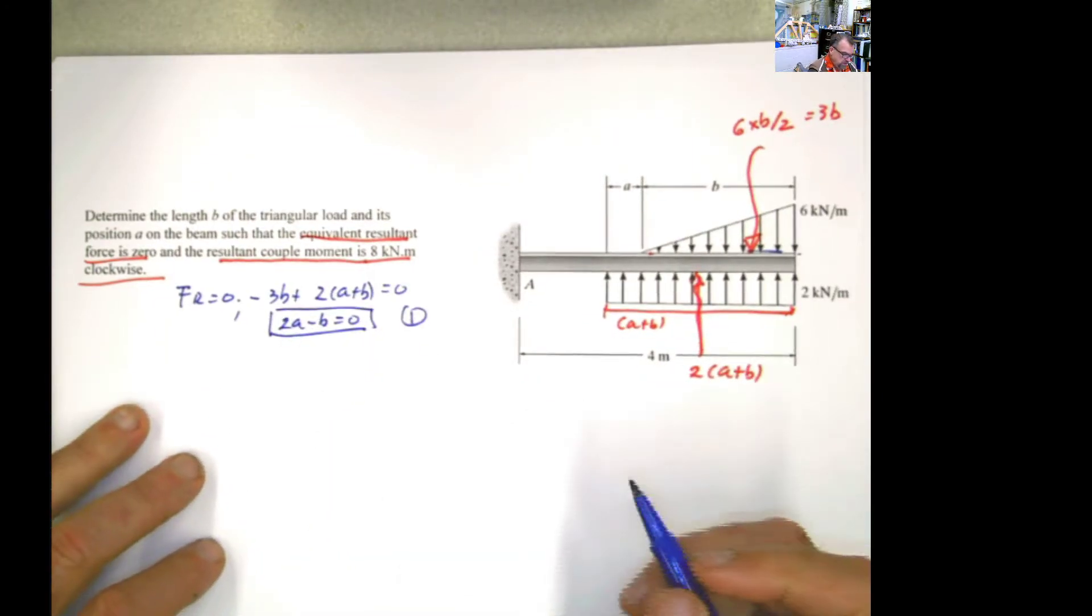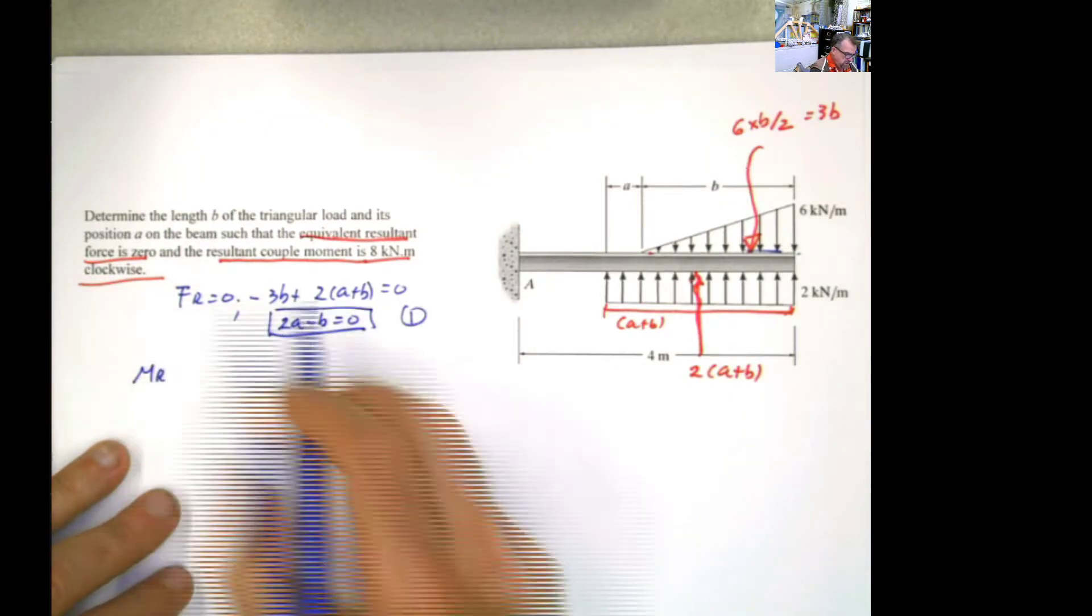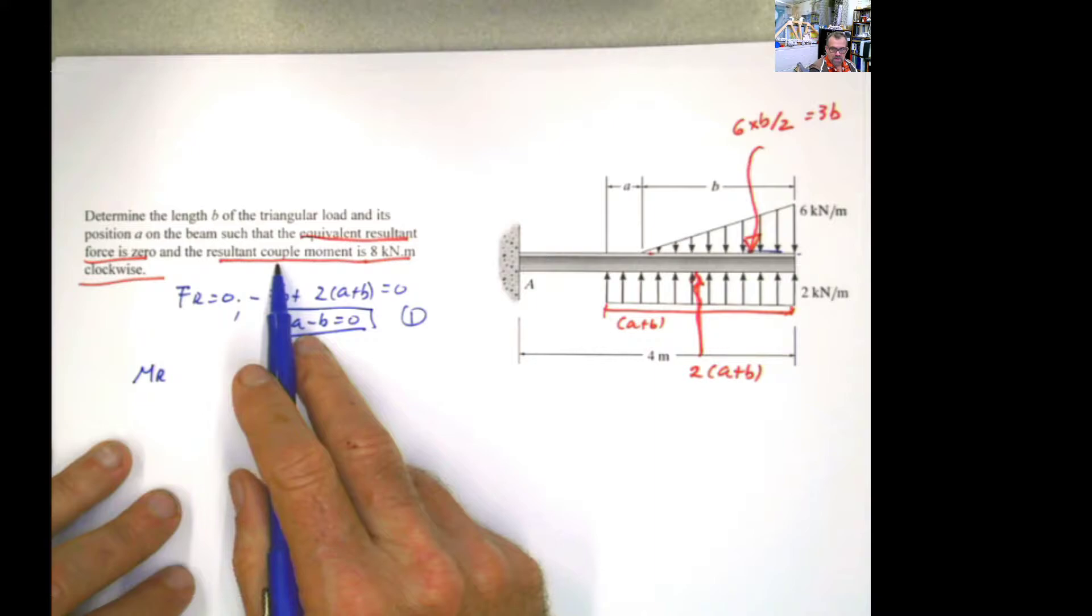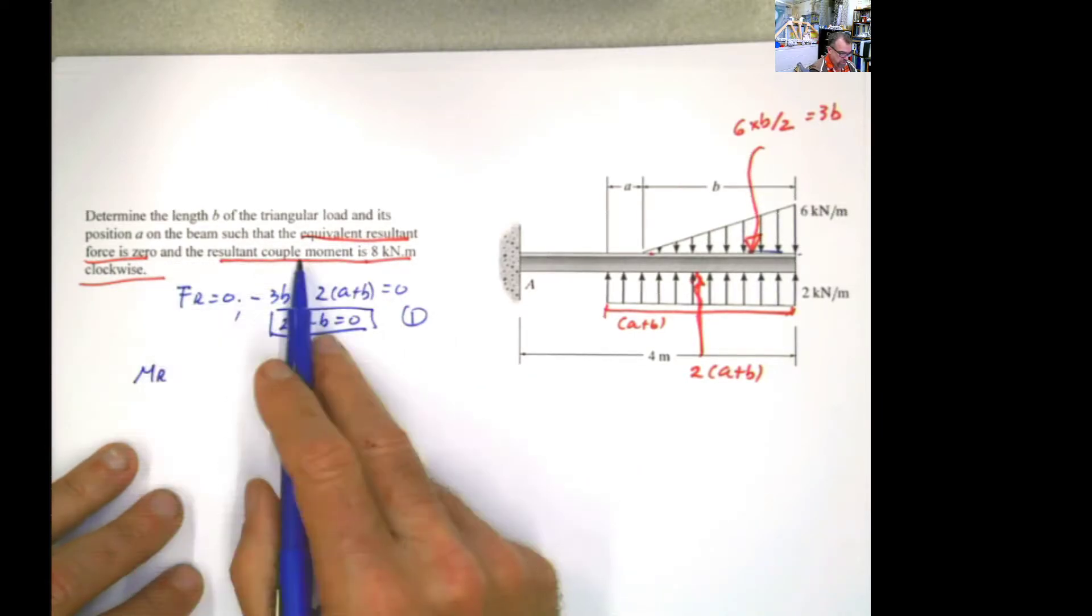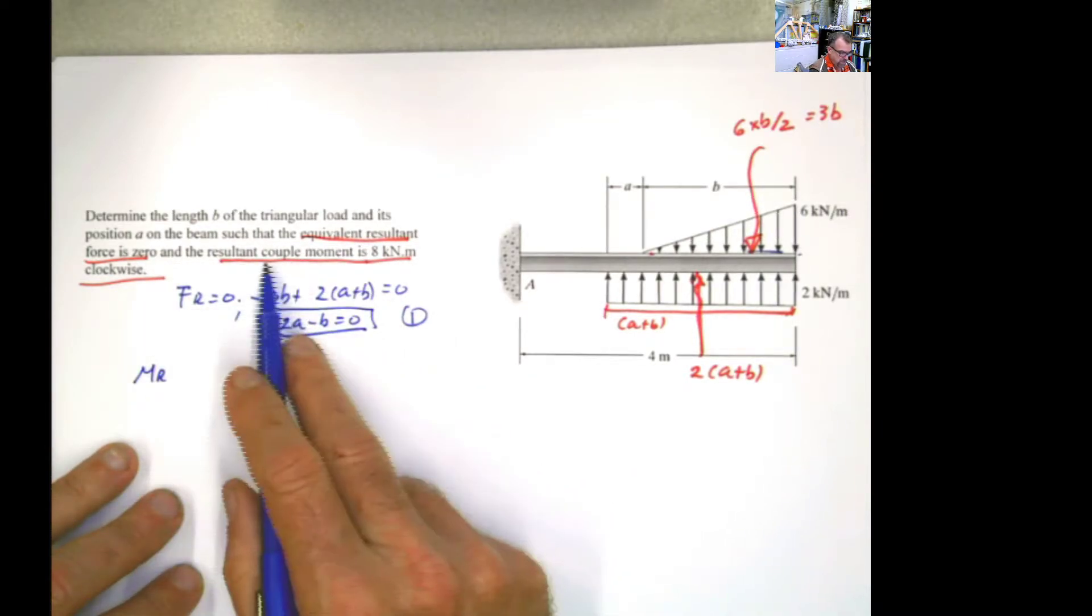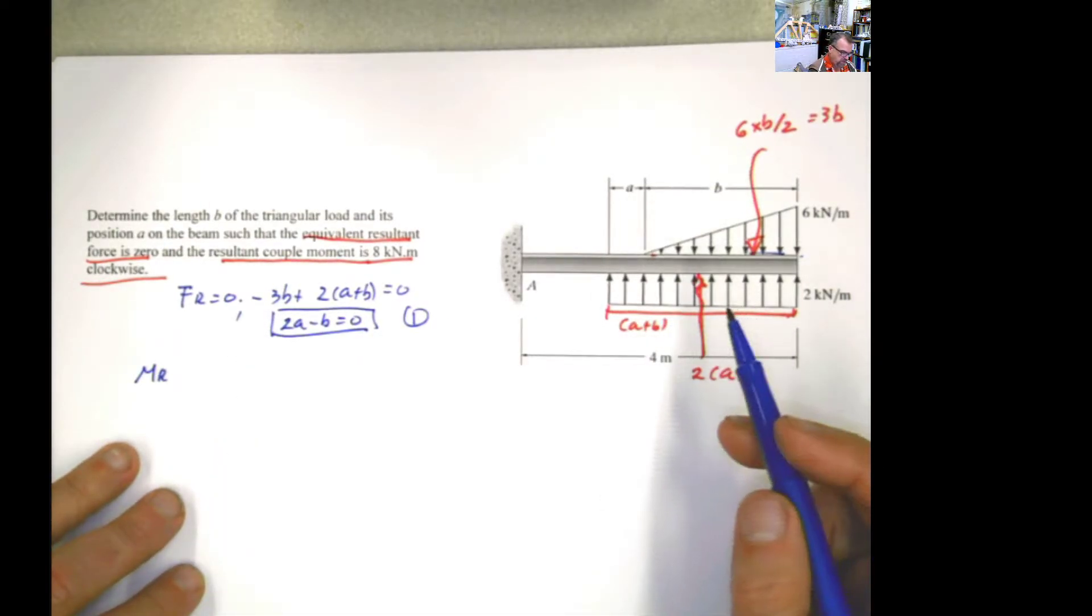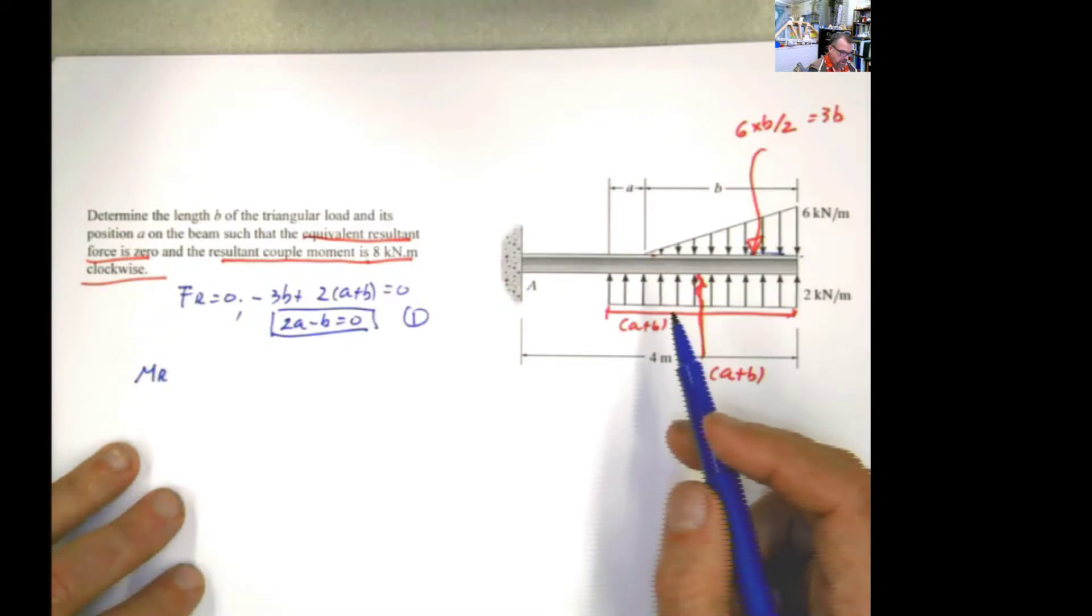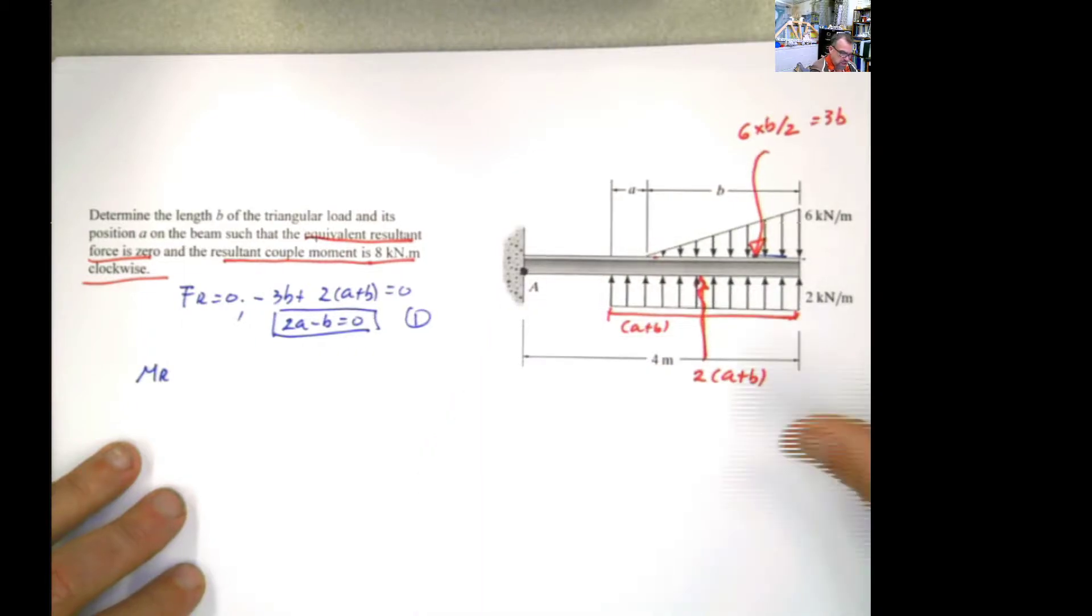Now the second equation, I get it from the resultant moment. Notice that it's a couple moment. And it's a resultant moment. And it doesn't specify with respect to any point because the load is 0. The resultant force is 0. It doesn't matter from what point you take the moment. And it has to be 8 kilonewton clockwise. If you do it with respect to this end, it's going to be longer. But you can do it. And I challenge you to do that.